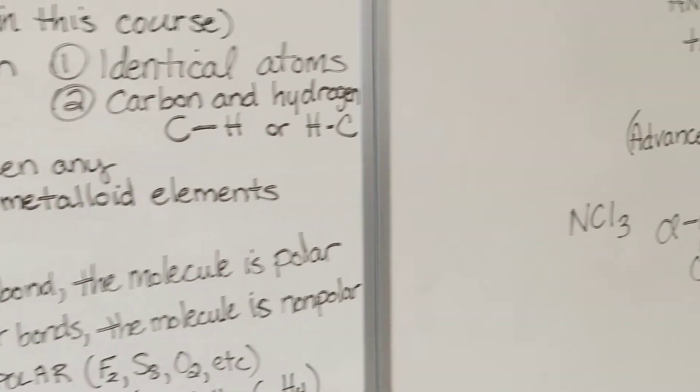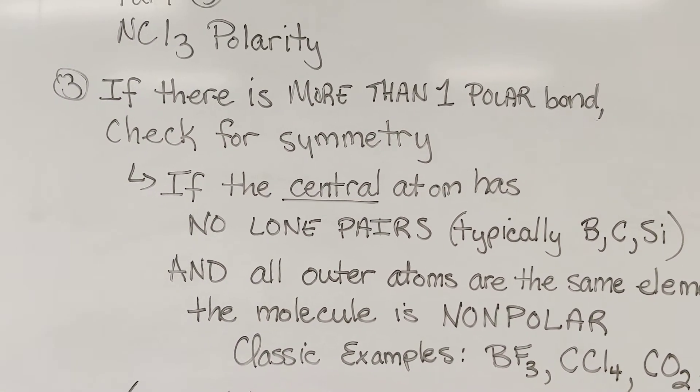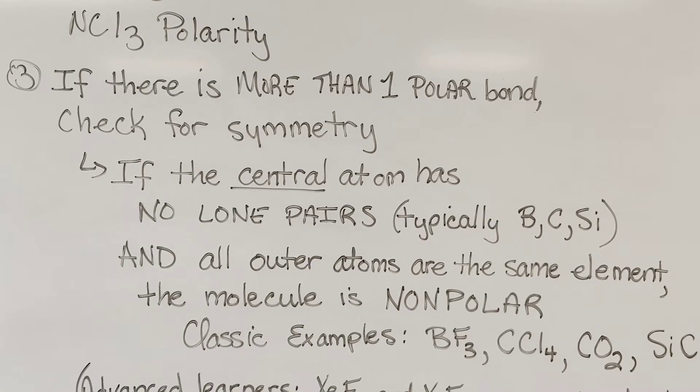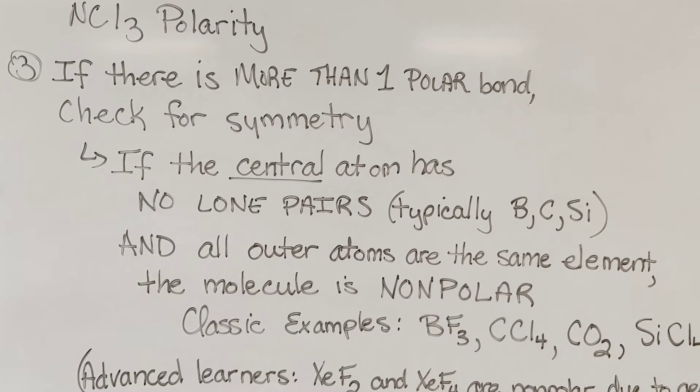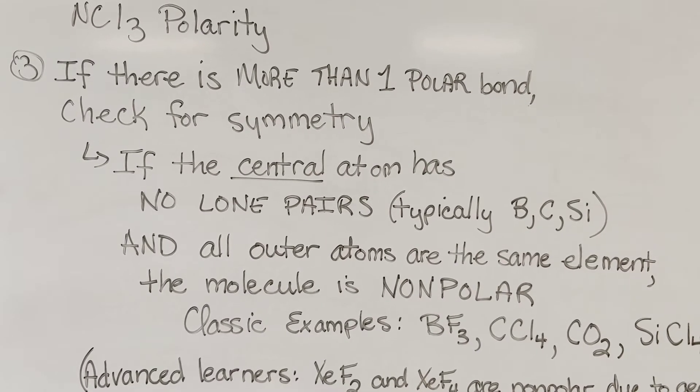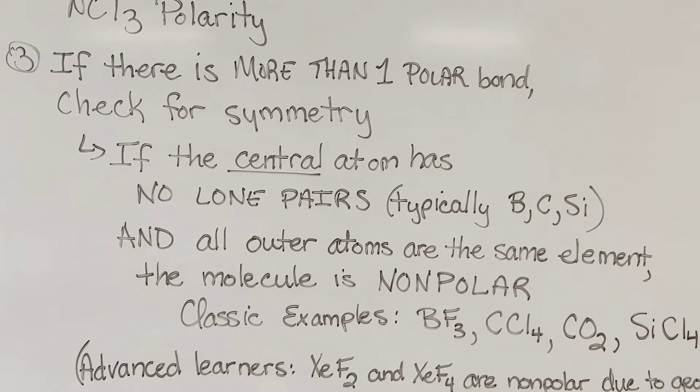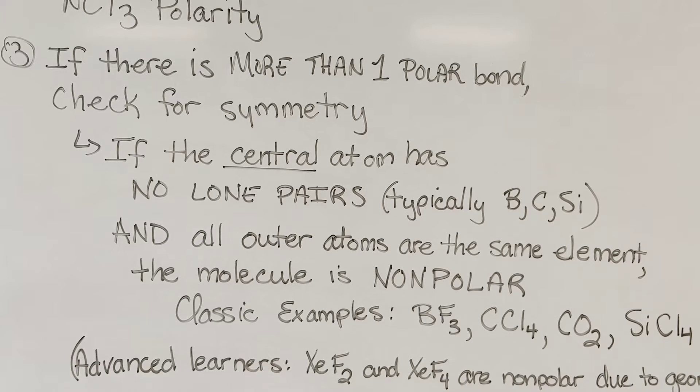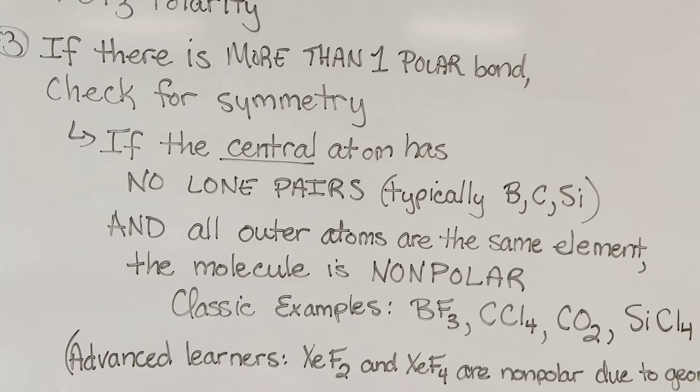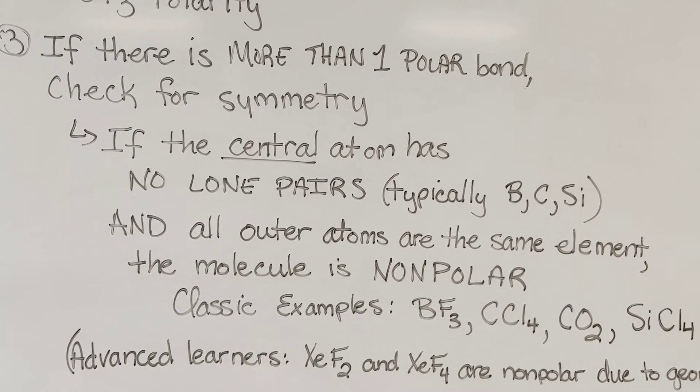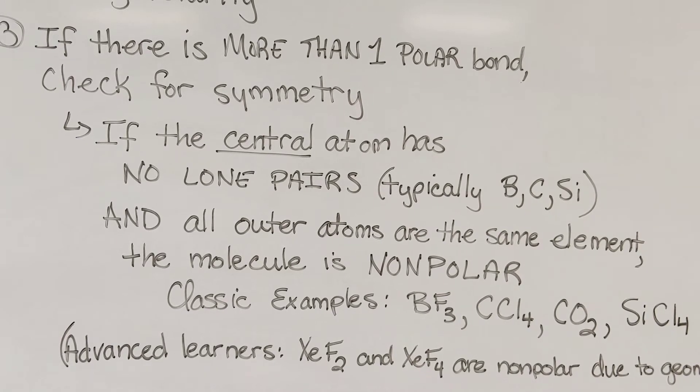Where it gets a little trickier is if there may be more than one polar bond, then we need to check for symmetry. A shortcut for this is if the central atom has no lone pairs of electrons. This is covered in the previous part two video on drawing the Lewis structure. If it has no lone pairs on the central atom, which will typically be found with boron, carbon, or silicon, and all outer atoms are the same element, then the molecule is nonpolar.